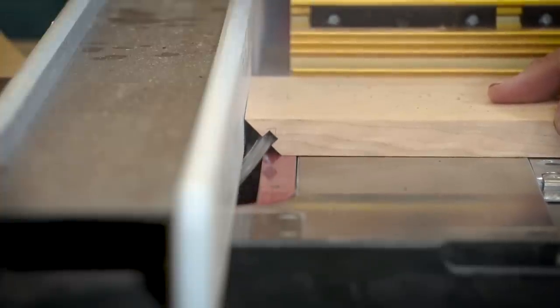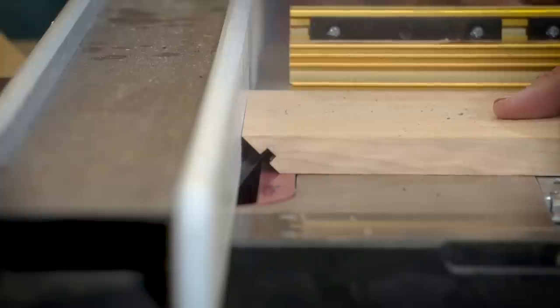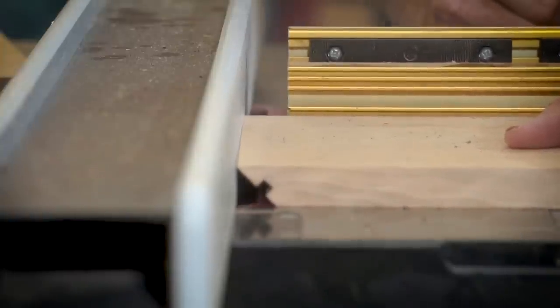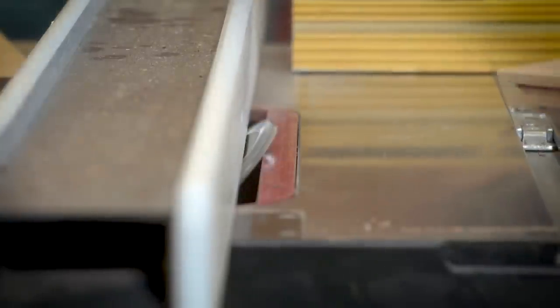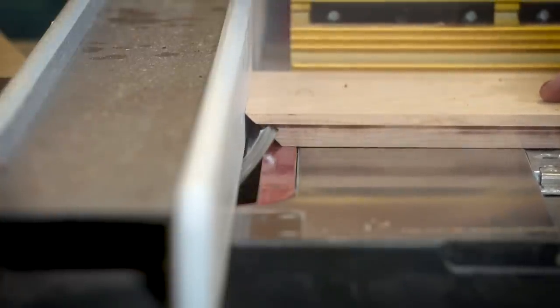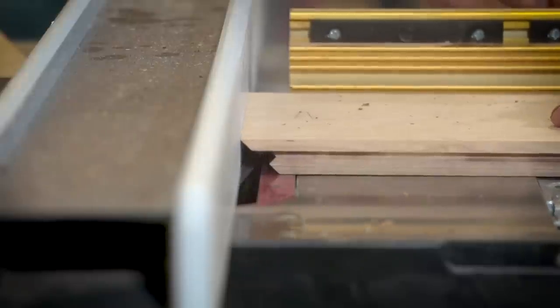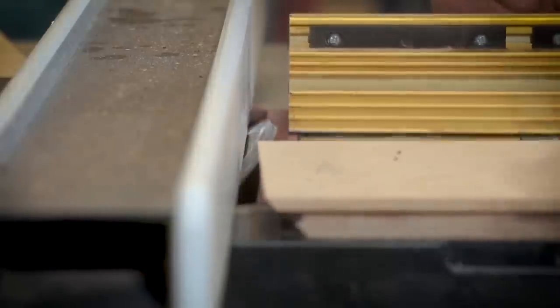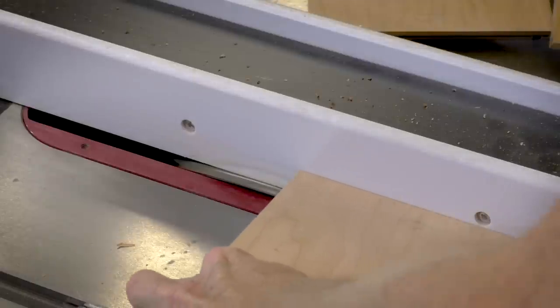Now I'm going to put a vertical spline down the mitered joint. To do that I'm using my dado blade set at 45 degrees so now it's perpendicular to the angle that I had already cut. I'll do that on each piece.